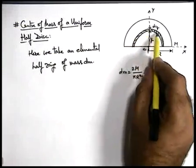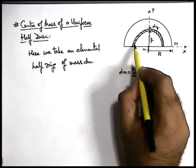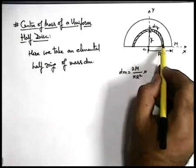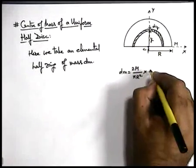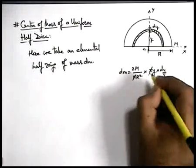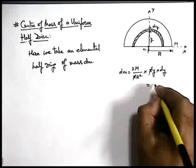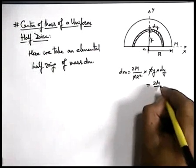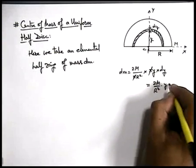Multiplied by the area occupied by the ring, which is its length into width. So the length of this ring is half of the circumference which is πy, into the width dy. So this dm can be written as 2m/r² × y dy.